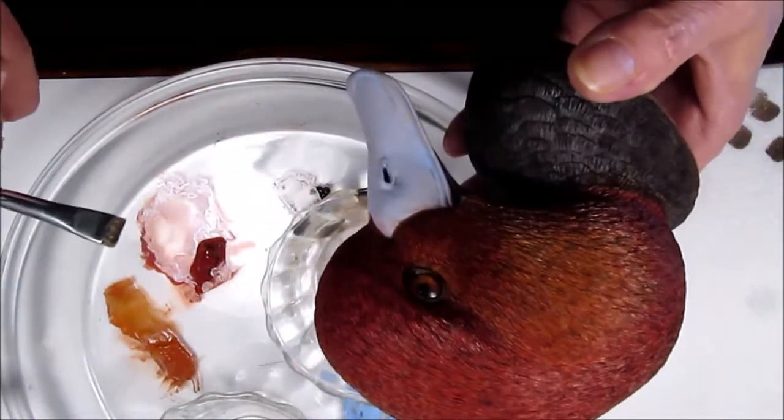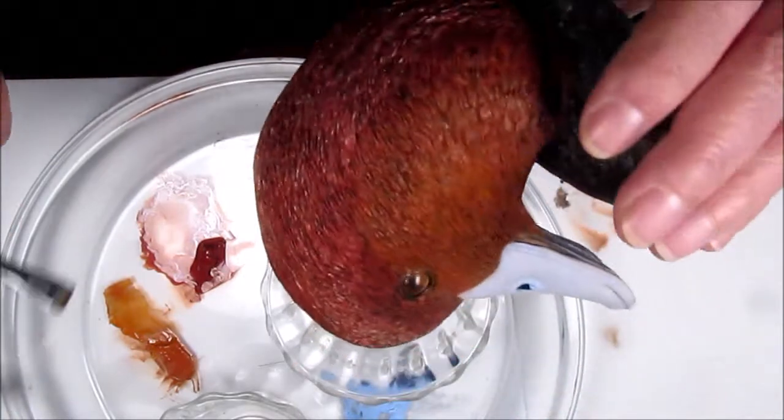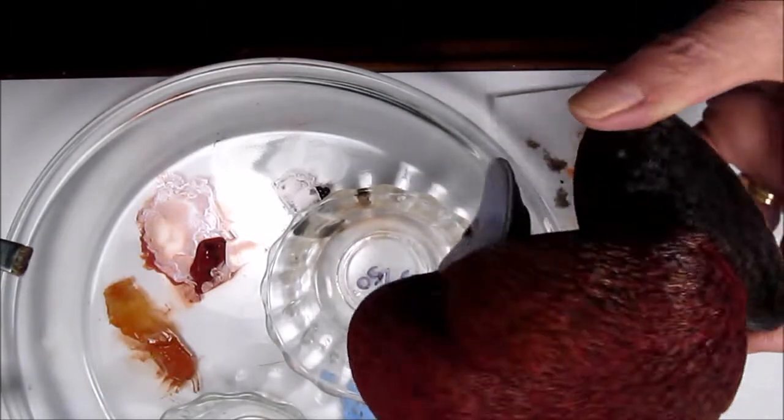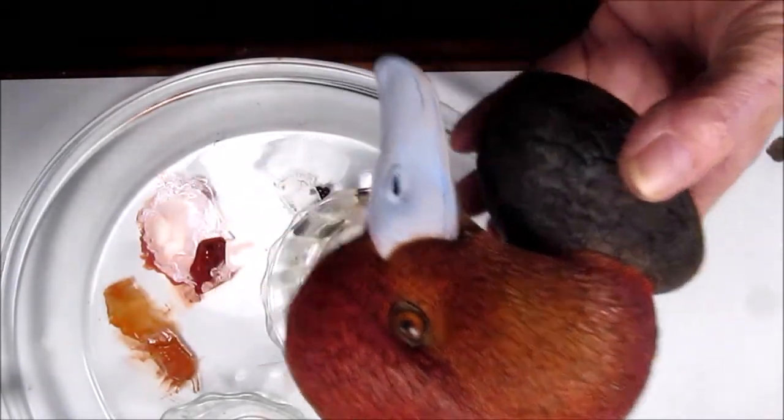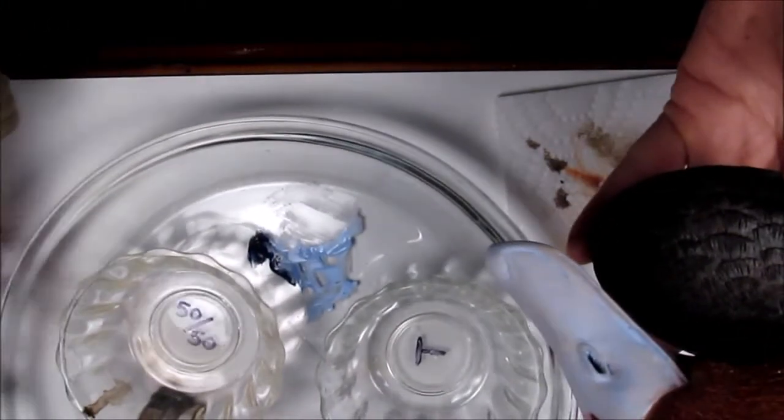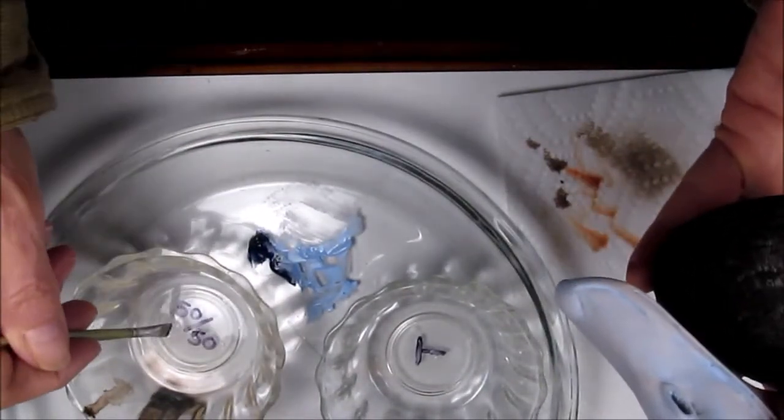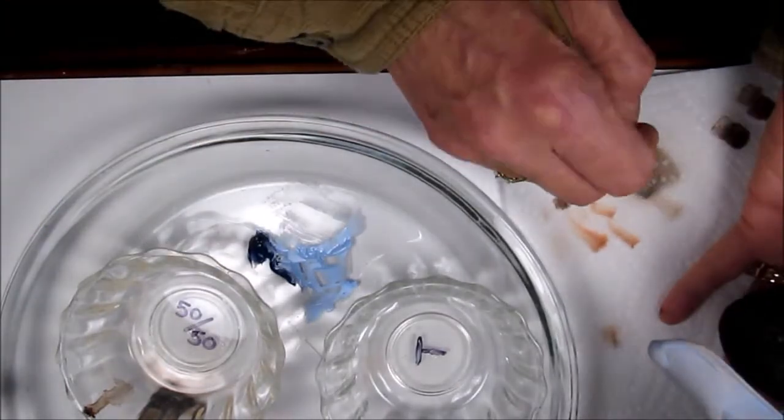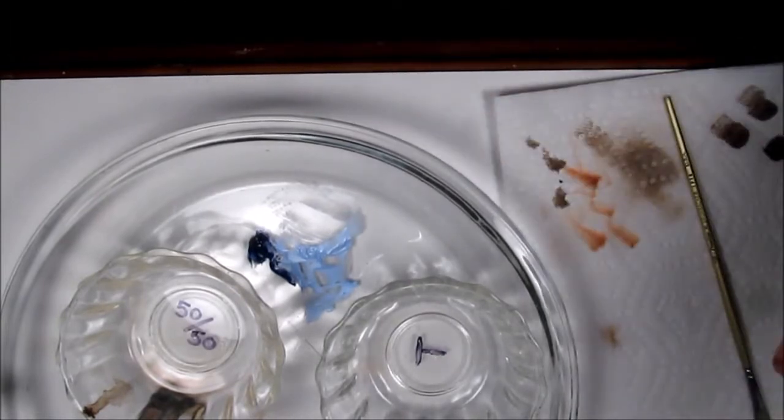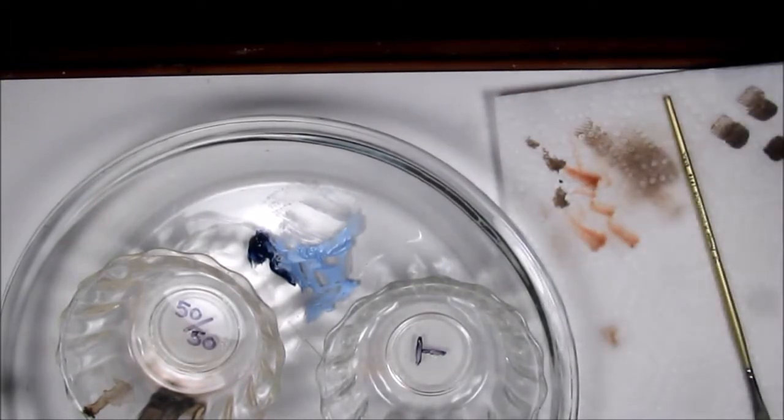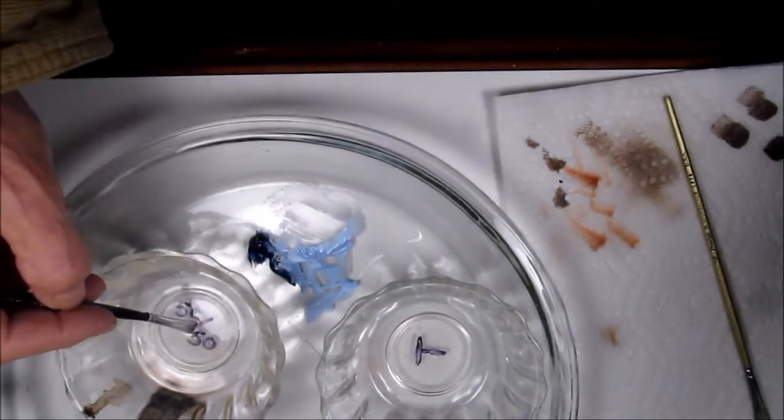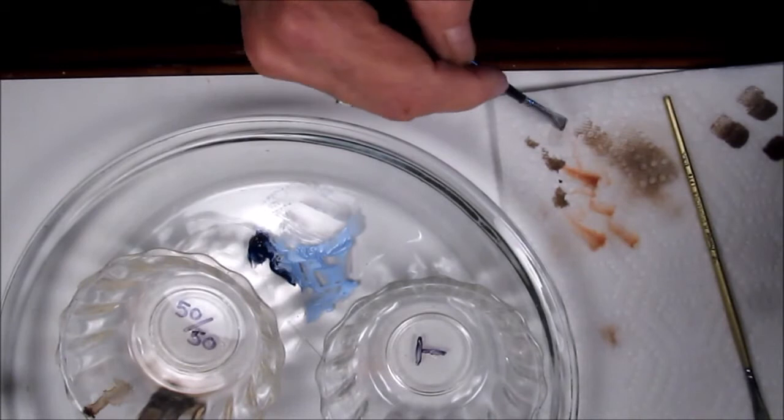Third coats applied and some blending done. I'm going to apply the second coat of light blue onto the bill. I'll be using my slant tip.